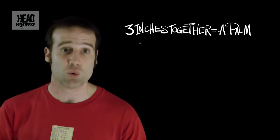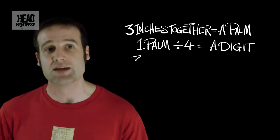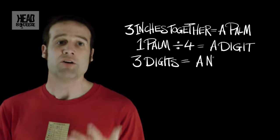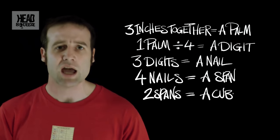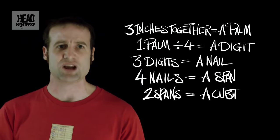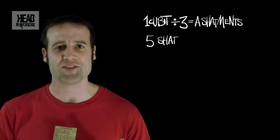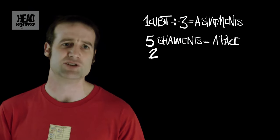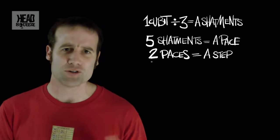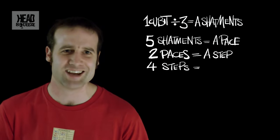Each Inch, if you take three of them together, you get a Palm. A Palm split into quarters gives you a Digit. Three Digits give you a Nail. Four Nails give you a Span. Two Spans give you a Cubit. A Cubit divided into thirds gives you a Shatmance. Why wouldn't you call something a Shatmance? If you take five Shatmance, you get a Pace. If you take two Paces, you get a Step — of course, two Paces to the Step.